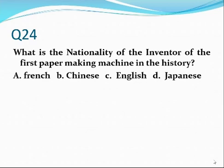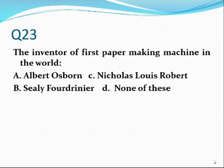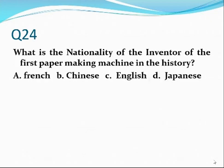Number twenty-four. What is the nationality of the inventor of the first paper-making machine in history? French. Nicholas Louis Robert was French. The answer is alpha — French.